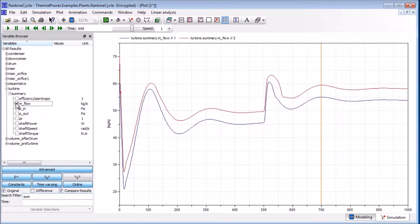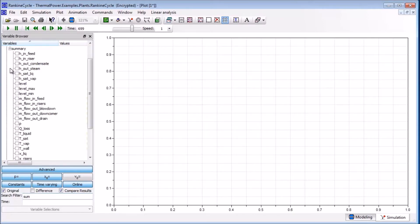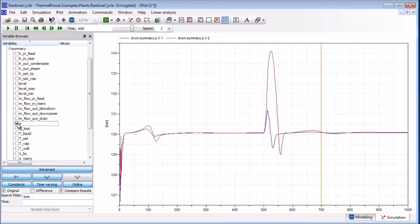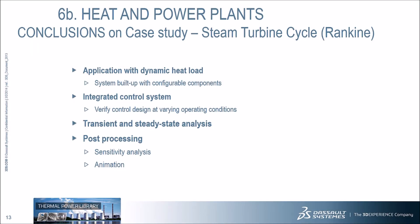We can also look at the drum pressure and see how the pressure controller handles the extra heat. As expected, the extra heat gives a higher peak in the pressure during the load change. We have demonstrated a dynamic model of a Rankine cycle with a heat load boundary condition applied with a ramp. The system was assembled from standard, parameterized, and fully configurable components, including a control system for drum pressure and level. This model can analyze both transient and steady-state behavior. We also demonstrated post-processing in Daimla, including basic plotting, animation of the diagram layer, sensitivity analysis by changing parameter settings, and the Compare Results feature.